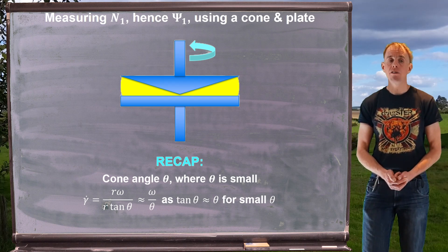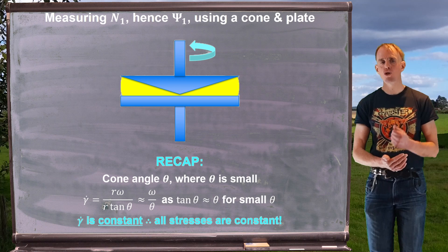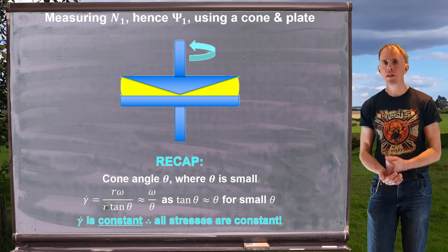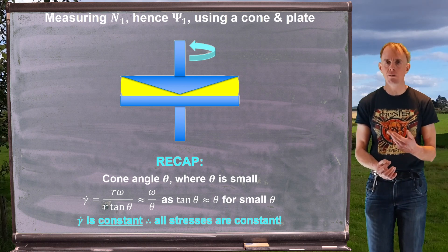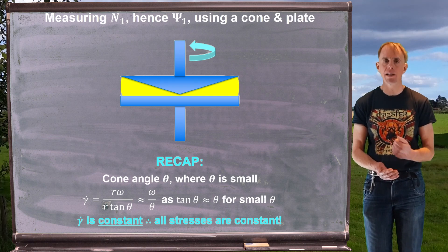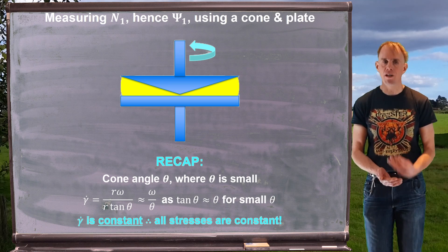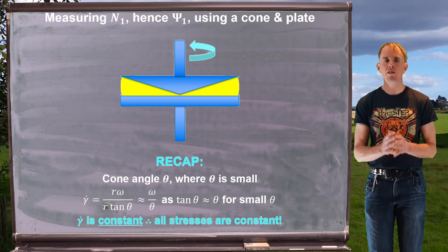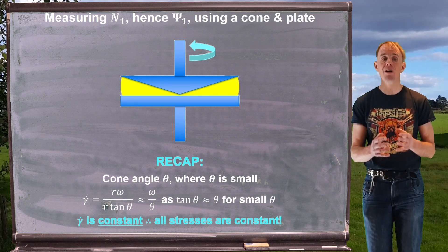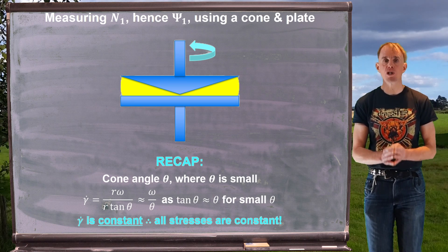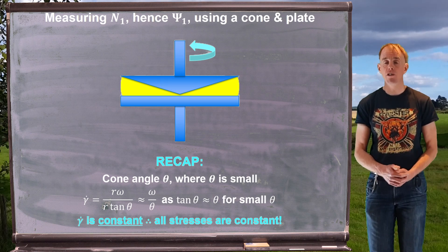Because the shear rate is constant, all shear stresses are constant. Since the normal stress coefficients Ψ = N1/γ̇² also have a shear rate dependency, if γ̇ is constant then Ψ is constant everywhere, meaning τ₁₁ and τ₂₂ are constant everywhere. The cone and plate is therefore an ideal tool to measure material properties because of this uniform shear rate and constant stress imposed on the fluid.